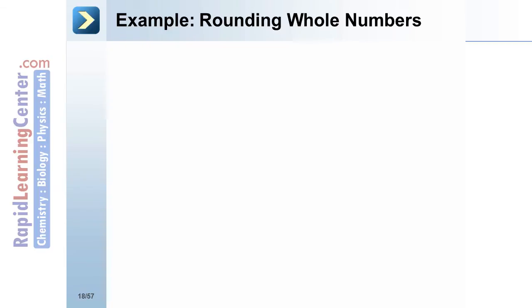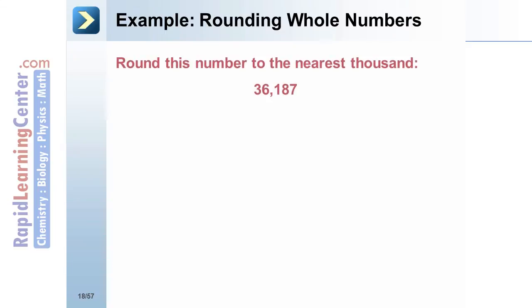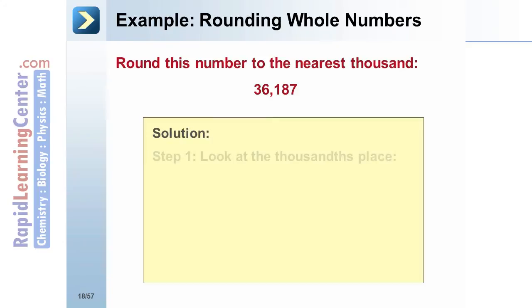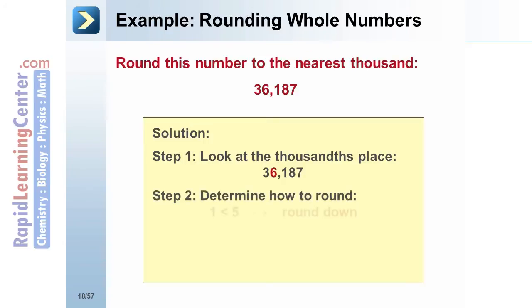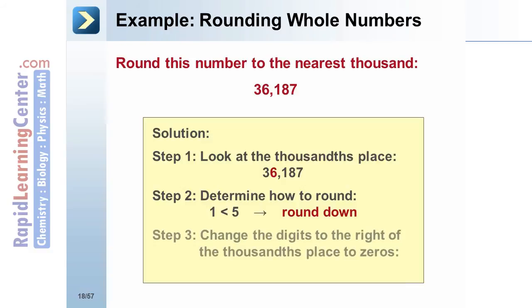Example — round 36,187 to the nearest thousand. First, look at the thousands place: 6 is the digit in the thousands place. Next, determine how to round: the digit to the right of 6 is 1, and since 1 is less than 5, round down. Lastly, change the digits to the right of the thousands place to zeros. 36,187 rounded to the nearest thousand is 36,000.